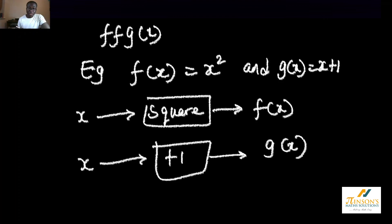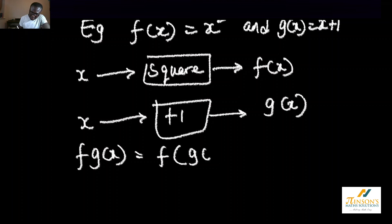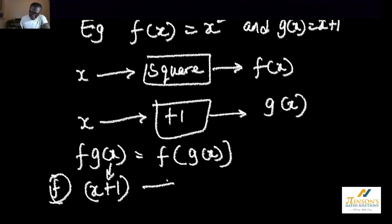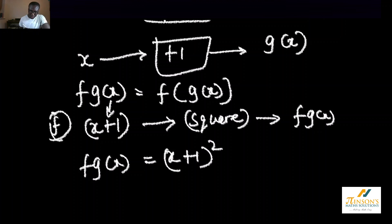Now a question might be asked in this case to find fgx. What this actually means is your f, you're gonna take the whole of your gx and replace it into your f. My gx is x plus 1. So when I come to my f instead of starting with x, instead of starting with fx I'm gonna start with x plus 1 because x plus 1 is my gx. What f says is I should always square. So I'm gonna square, and when I square my g my outcome will now become my fgx.